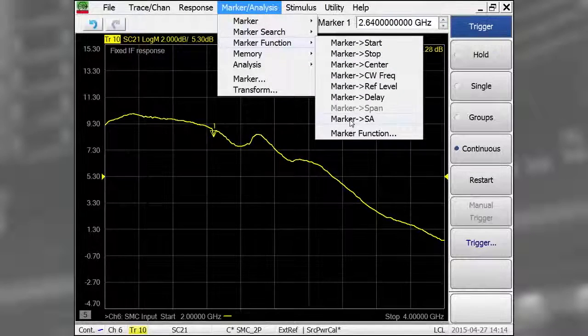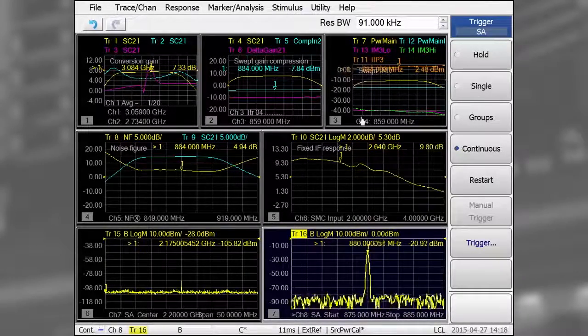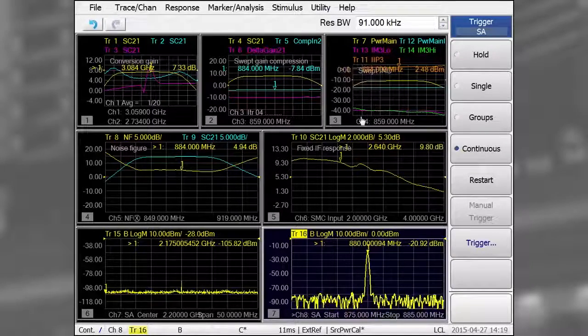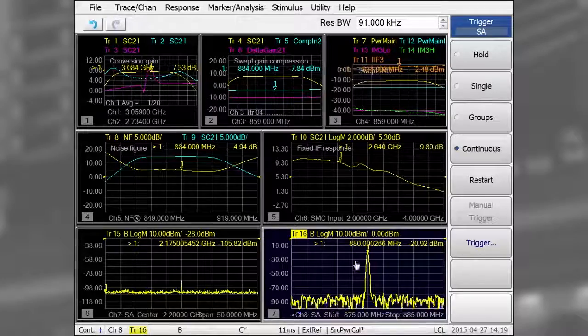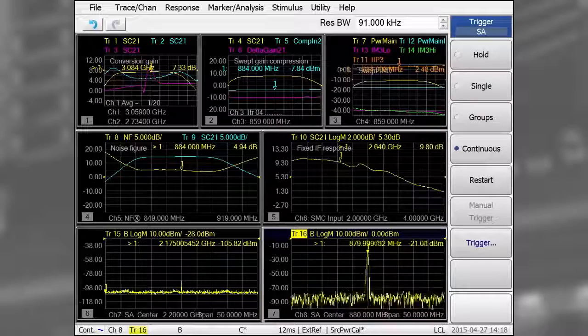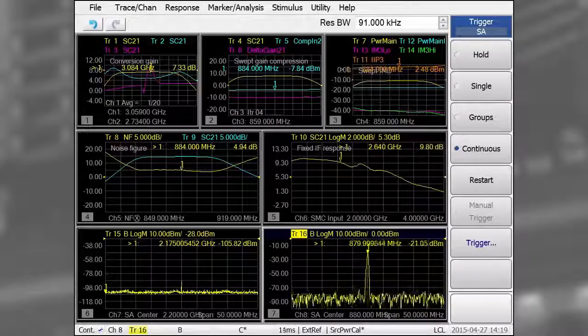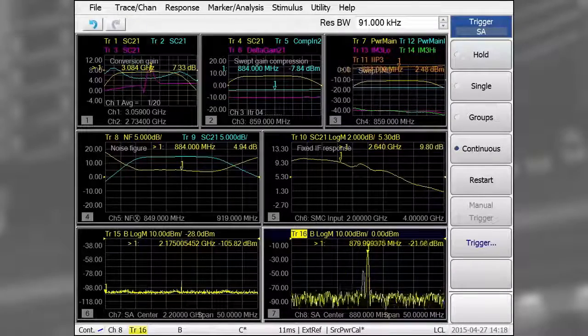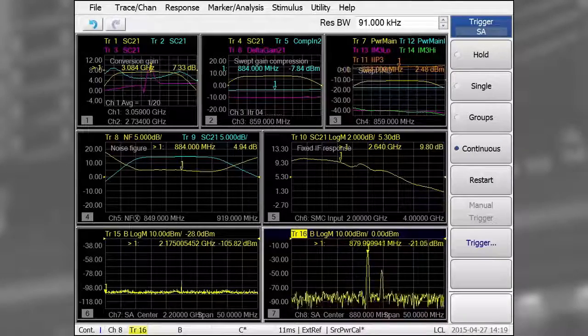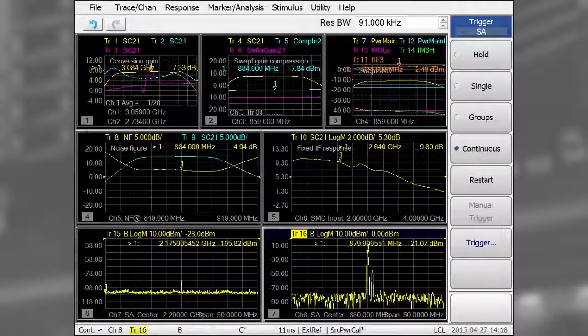Using the Marker to SA feature again, I can open a new window with a new spectrum analyzer channel. Again, I see a fixed output signal. Next, I'll set the input and LO signals to sweep, which creates a fixed IF measurement. Now, the spectrum display shows a crossing spur that interferes with the desired output signal, causing the glitch on the fixed IF conversion trace. Observing how fast the crossing spur moves can help provide insight into its polynomial order, helping diagnose the problem.